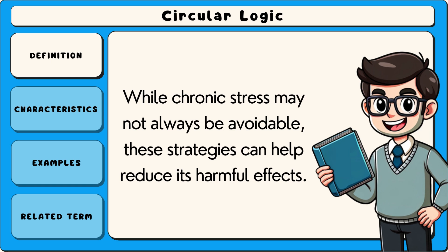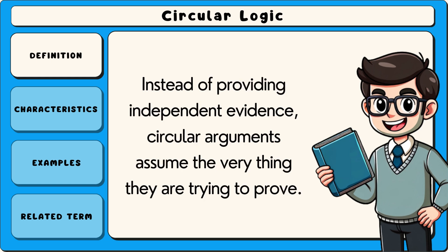Circular logic, also known as circular reasoning, is a logical fallacy in which an argument's conclusion is used as its own proof, creating a loop without valid reasoning. Instead of providing independent evidence, circular arguments assume the very thing they are trying to prove.